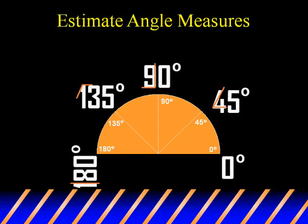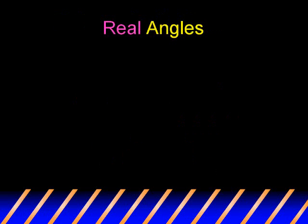To estimate angle measures you can use certain reference points: 0, 45 degrees, 90 degrees, 135, and 180. If you take a piece of paper and fold it in half and then in half again, you will get 45, 90, 135, and then your straight 180 as reference points. Here are some examples of real angles.